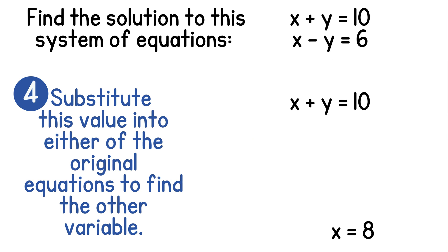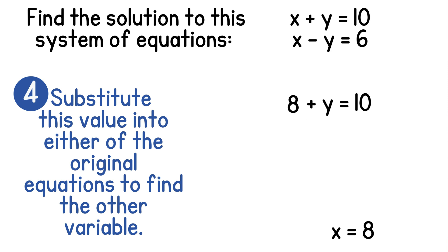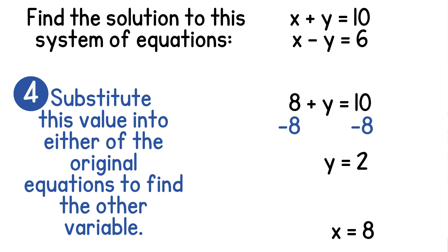We can choose either equation, but for this example we'll just do the top one. So we'll substitute 8 in for x. This gives us 8 plus y is equal to 10. We'll solve for y by subtracting 8 on each side. This gives us y is equal to 2. So now we have our solution for this system at (8, 2).